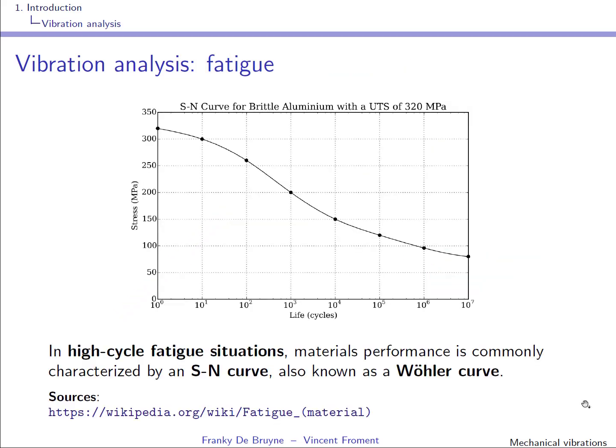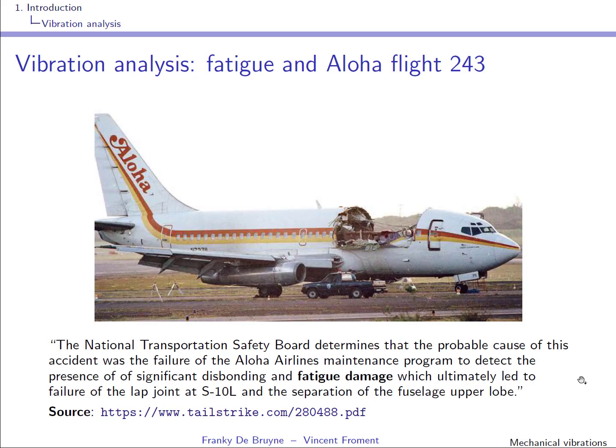Fatigue is characterized by the so-called Wöhler curve or SN curve. The S stands for cyclic stress on the Y axis, and N is the cycles to failure on the X axis. This curve is obtained by applying regular sinusoidal stress and counting the number of cycles to failure. If the stress is higher, the number of cycles to failure is smaller. Fatigue can have very destructive effects, and fatigue detection should always be part of the maintenance program. Here you see the result of fatigue on Aloha Airlines flight 243 in 1988 — part of the fuselage came off because maintenance failed to detect the presence of fatigue damage.